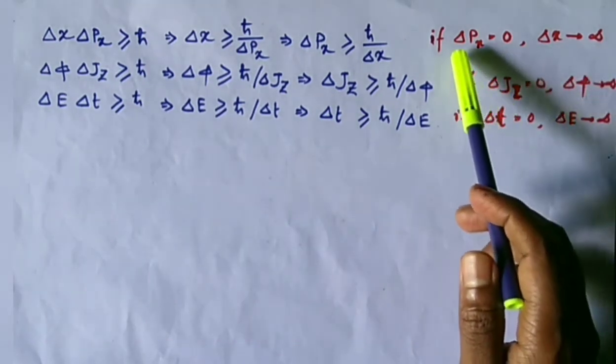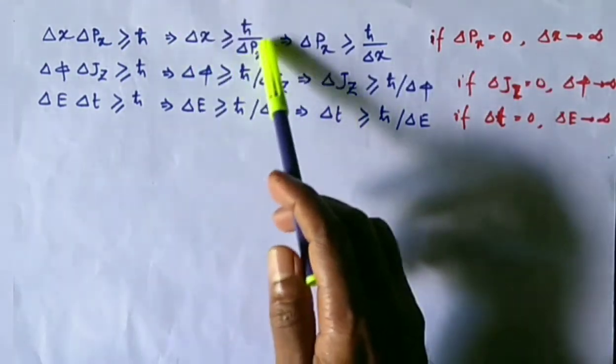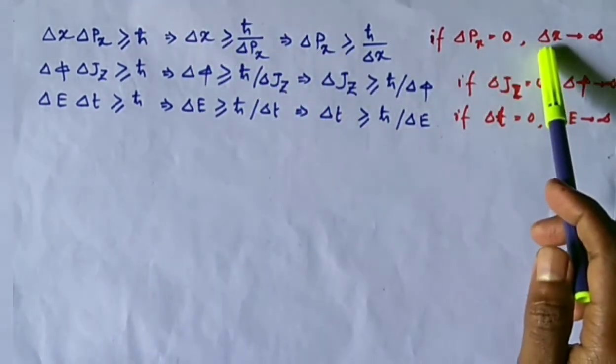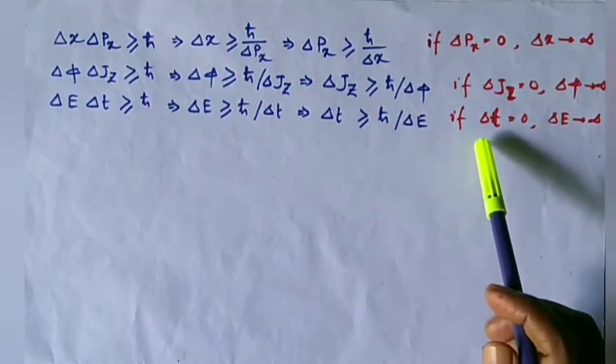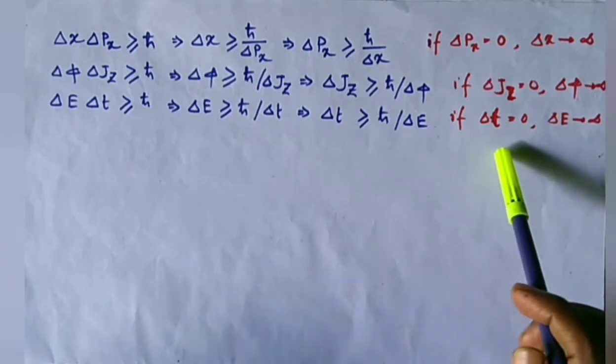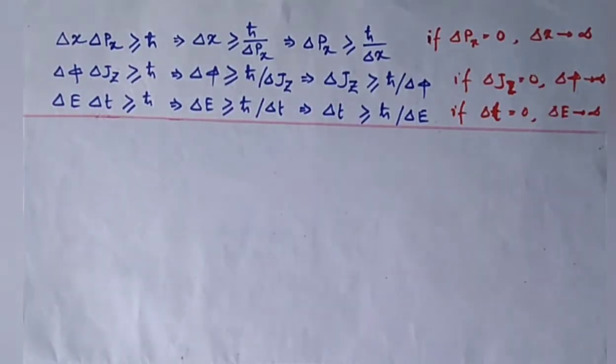That is, if delta px equals zero in this equation, then delta x becomes infinity and vice versa. Similarly, these are also true. Now we shall illustrate this principle.